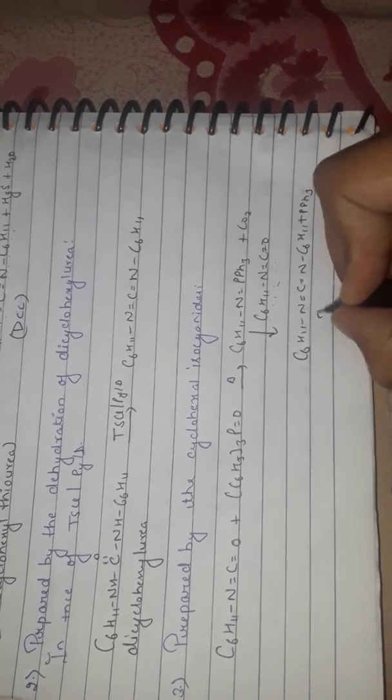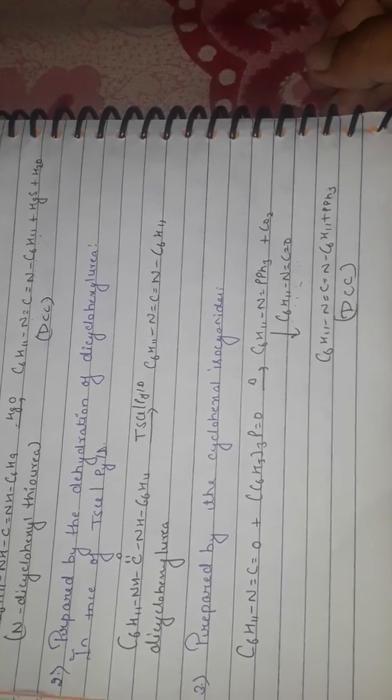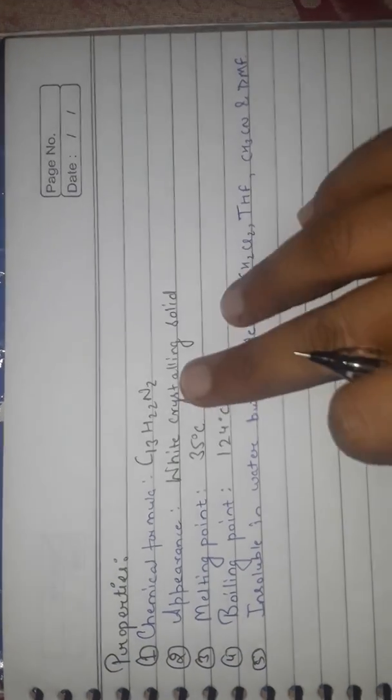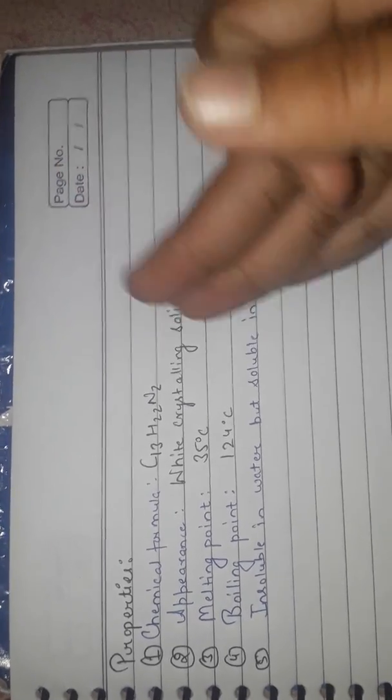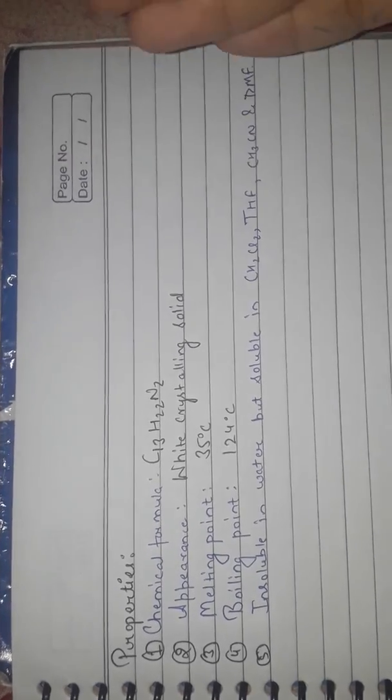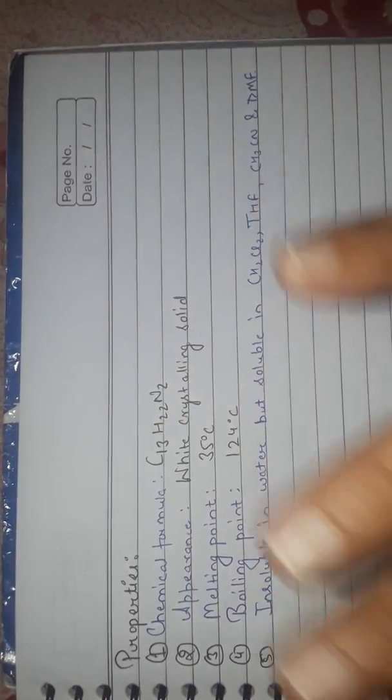Properties: Chemical formula C13H20N2, white crystalline solid, melting point 35°C, boiling point 124°C. Insoluble in water but soluble in CS2, CH2Cl2, THF, CH3CN, and DMF.